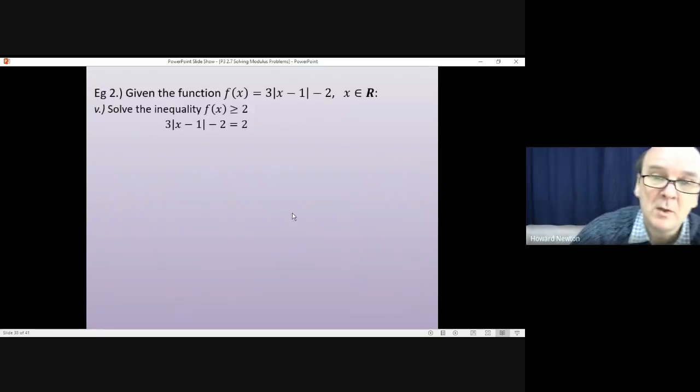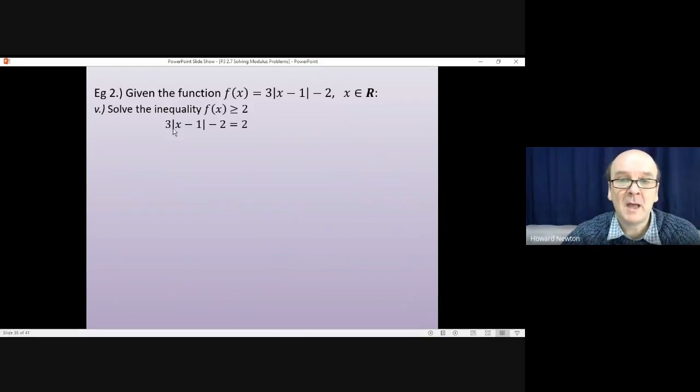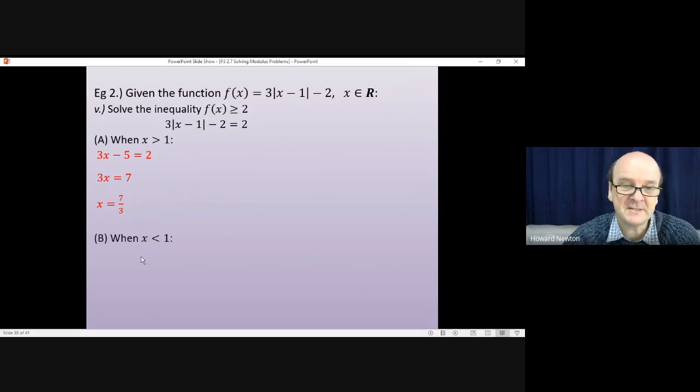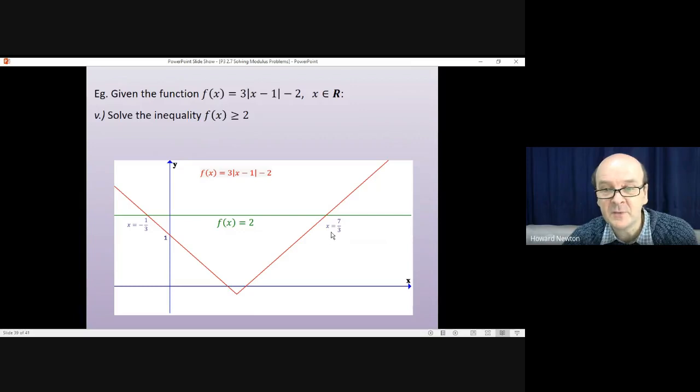We need to solve the inequality. To solve the inequality, we need to know when our function is equal to two. Well, first of all, when x is bigger than one, that's the equation we have, 3x minus 5. Same as before. We want to know when it's equal to two. That's when 3x equals seven. That's when x equals seven thirds. For the other point on the left hand side, b, that's when x is less than one. And that's when the modulus flips because you multiply it by minus one. So you get 1 minus 3x equals two. Minus 3x is one. X is minus a third. So those are the x values at the two crossing points. X equals seven thirds and x equals minus a third. So a is where x is seven thirds. B is where x equals minus a third.